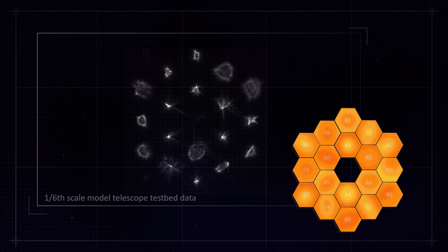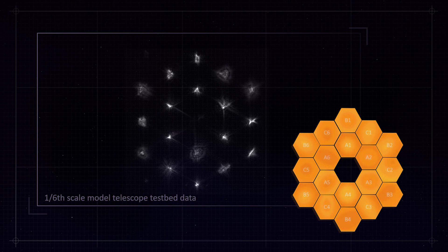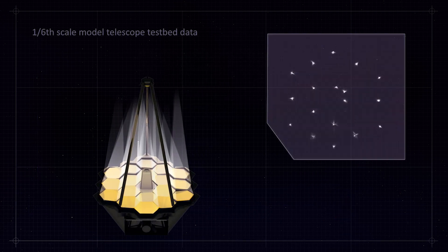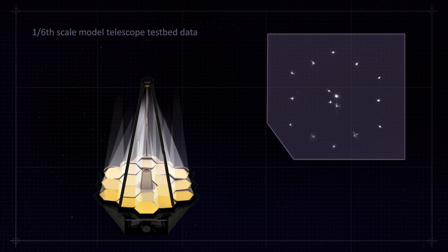That's sort of the last step before we take those 18 spots and put them on top of each other to start forming a single star going through the 18 separate telescopes. That's the work that we'll be starting soon.